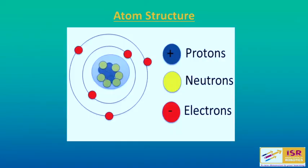So atom is a fundamental piece of matter which has three kinds of particles: proton, neutron, and electrons. This is the atom structure in which the red dots represent electrons. Electrons are negatively charged particles and they always revolve around the nucleus in the valence bands. Protons are the positively charged particles and neutrons are present in the nucleus of the structure.